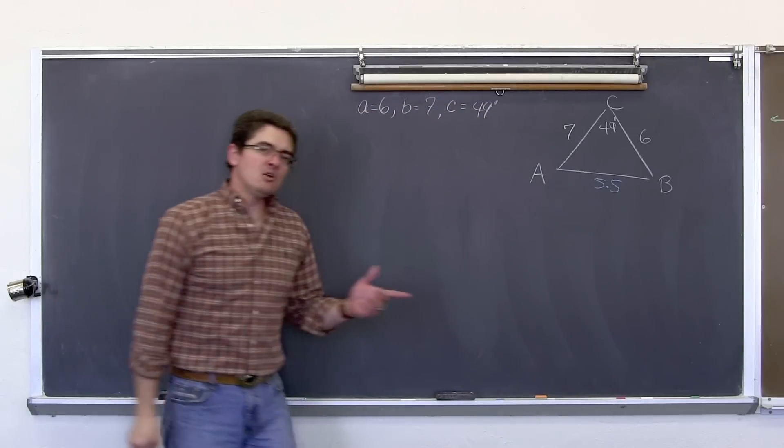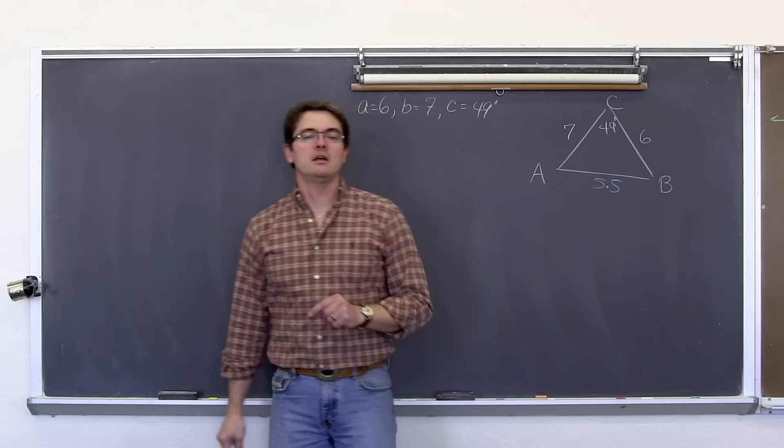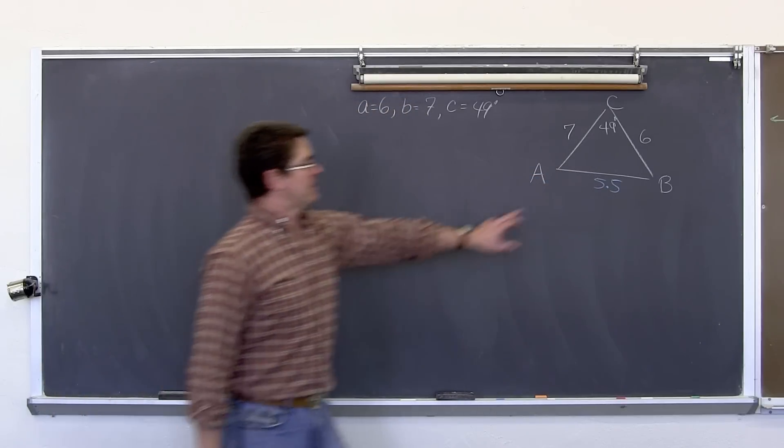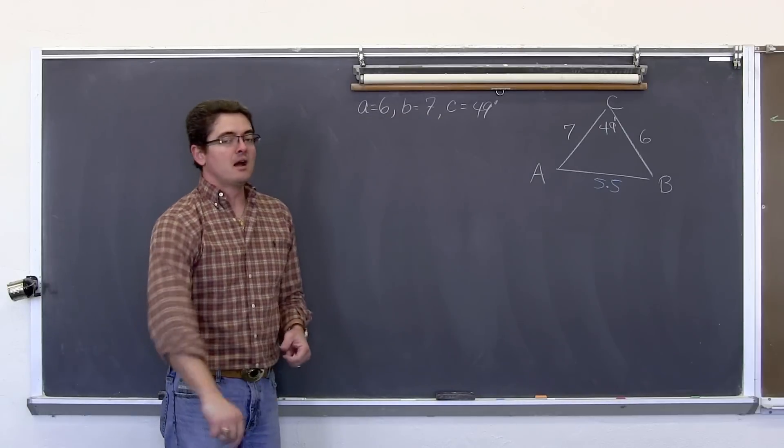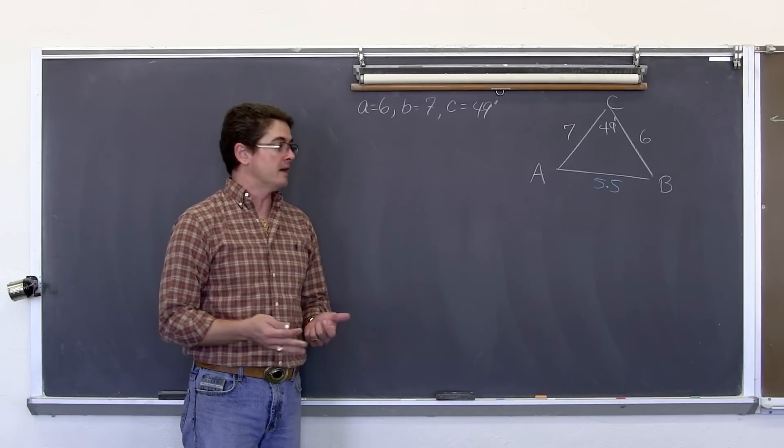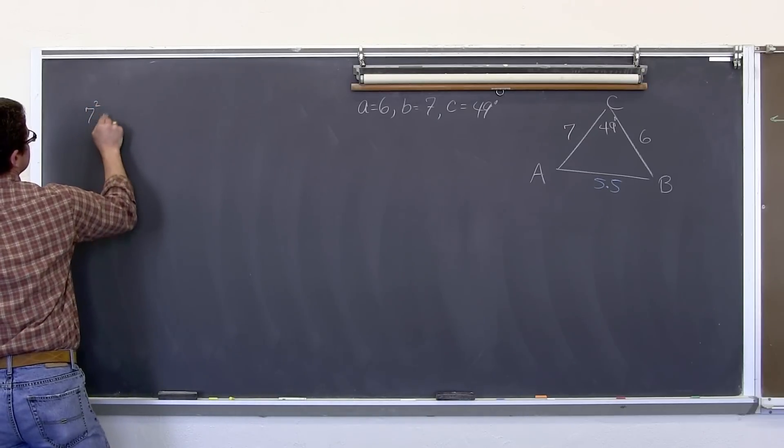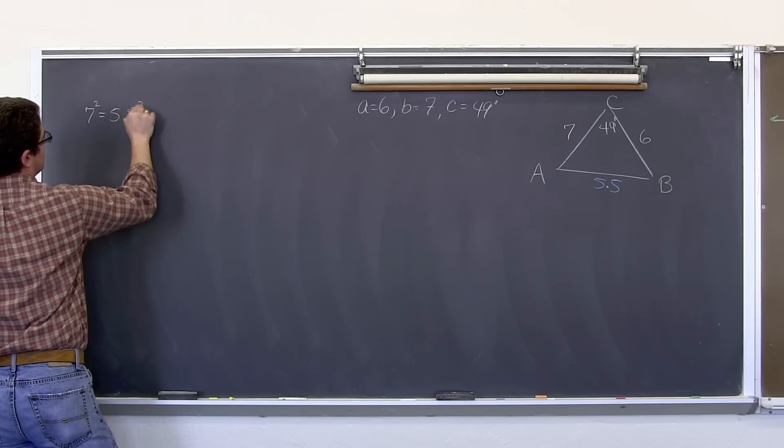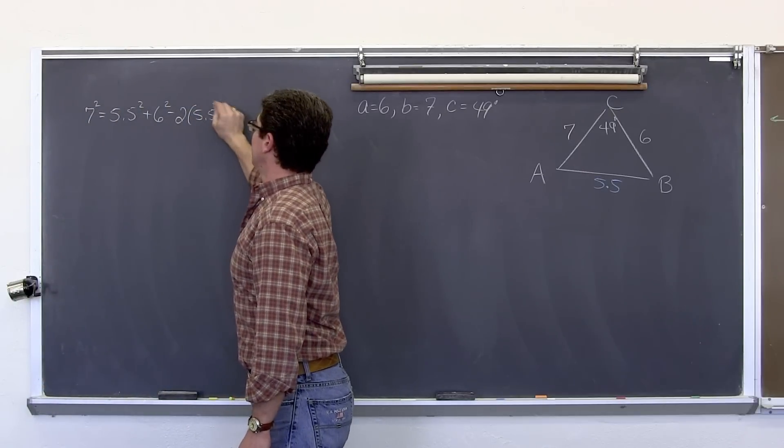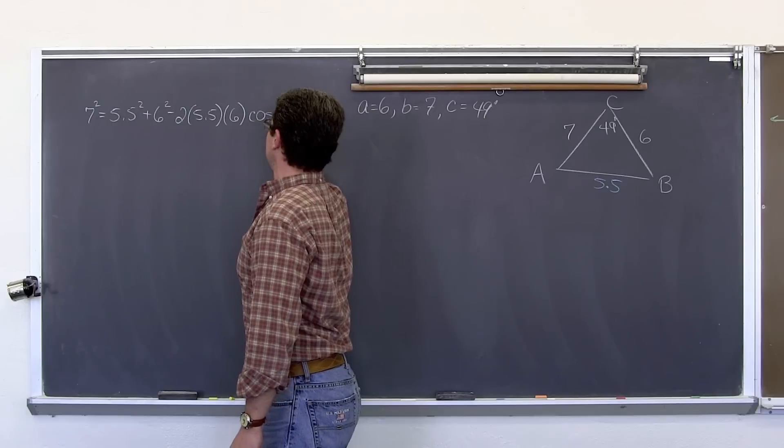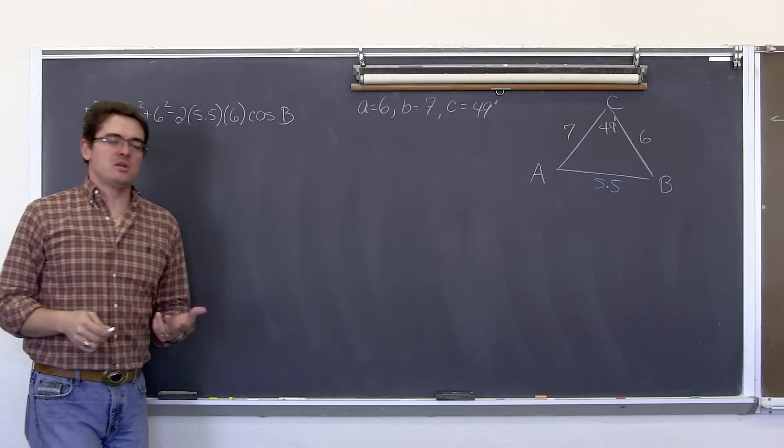And let's find angle B. Now angle B is opposite the longest side of seven. So I am going to make sure to do law of cosine in case angle B happens to be obtuse. I don't think it is going to be because these are so similar in size. But I am going to do law of cosine to find angle B just in case it is obtuse. I don't want to get the wrong answer from my calculator trying to do law of sine. So we have seven squared equals 5.5 squared plus six squared minus two times 5.5 times six times the cosine of the angle we are trying to find which is angle B.